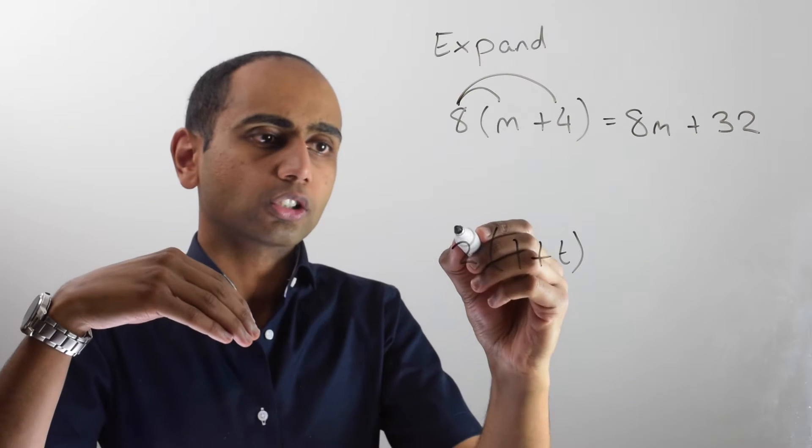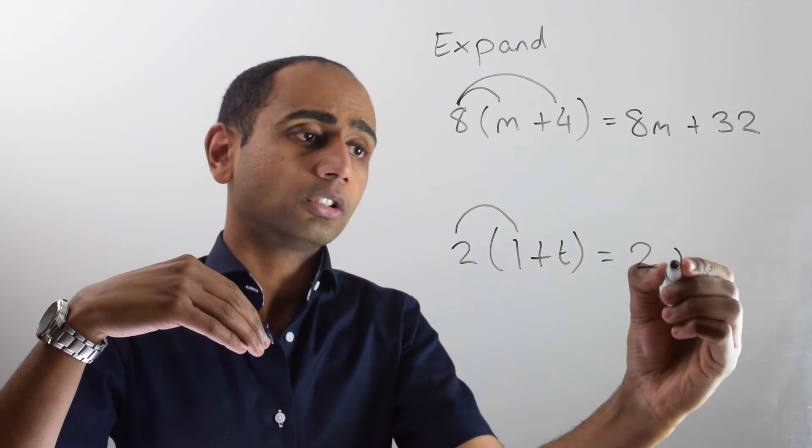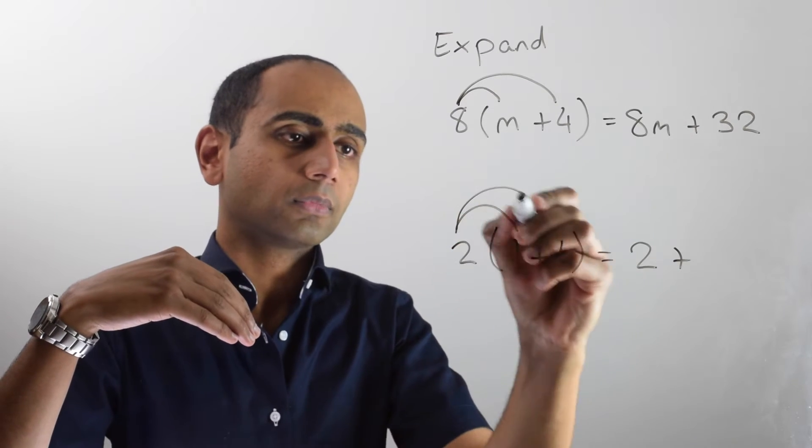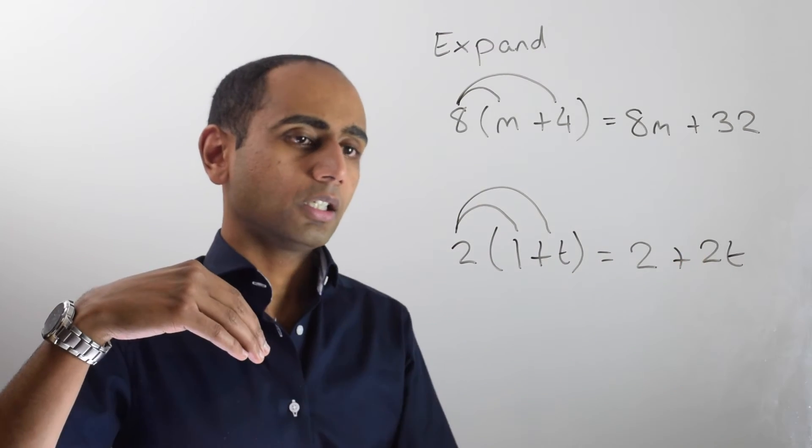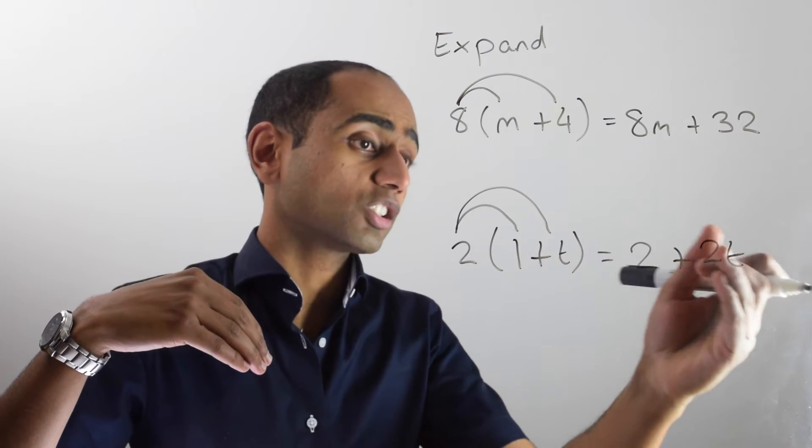In the next example I've got two lots of 1, which is 2. Then I'm going to add on two lots of t. Two lots of t is 2t. So two lots of (1 + t) is the same as 2 + 2t.